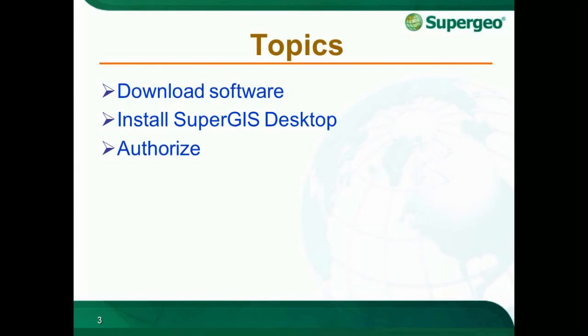In this video, we are going to cover three topics. First, I will show you where and how you can get the latest version of SuperGIS Desktop, including obtaining the license number. If you don't have a license number, we offer a trial number for 30 days. You can get your trial number from the account email that you should receive from staff at supergeotech.com. Next, I am going to guide you to install SuperGIS Desktop and remind you of the setup requirements before installing. After that, we go into authorization. SuperGIS Desktop is available with a single-use license and a 14-use license.